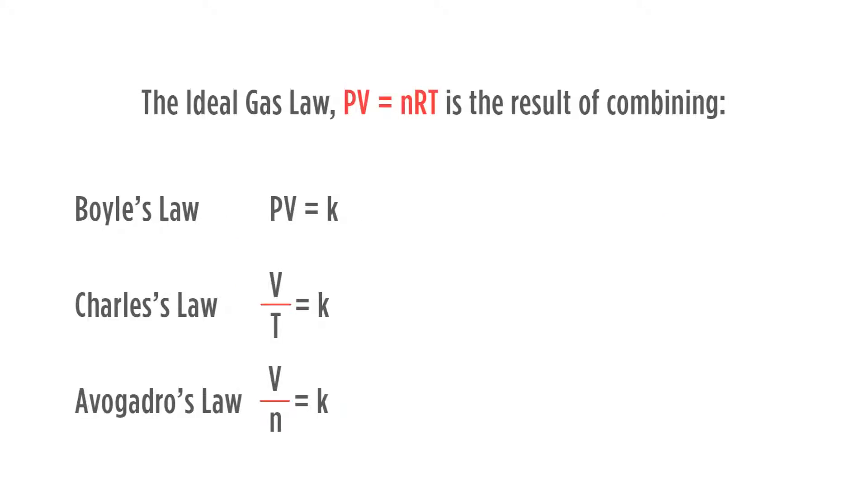The ideal gas law, PV equals nRT, is a result of combining Boyle's law, Charles' law, and Avogadro's law.